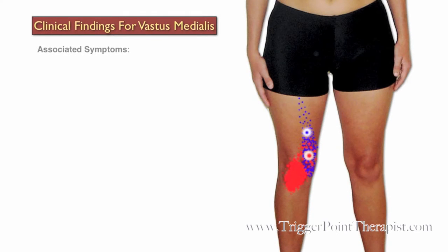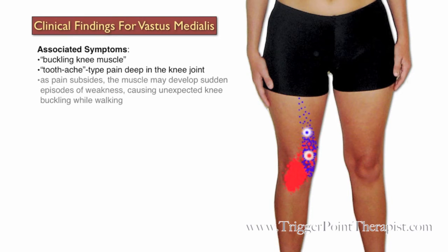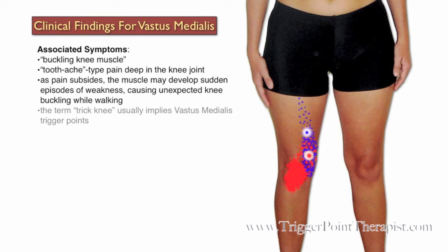Clinical findings for the vastus medialis trigger points. Dr. Travell refers to this muscle as the buckling knee muscle. Clients will complain of a toothache type pain deep in the knee joint. As their pain subsides, the muscle can develop sudden episodes of weakness causing unexpected knee buckling while they're walking, especially up or down stairs. The term knee buckling usually implies active trigger points in the vastus medialis muscle.